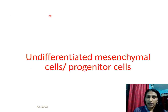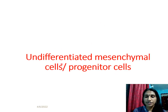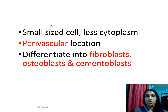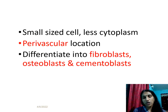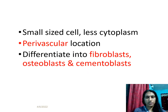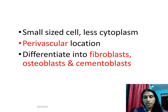Progenitor cells or undifferentiated mesenchymal stem cells are small cells located closer to blood vessels. They are the precursors to fibroblasts, osteoblasts, and cementoblasts.